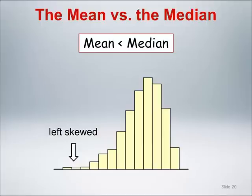If the histogram trails off to the left, as shown here, we say that the histogram is left skewed. This implies that the mean is smaller than the median. The long tail indicates that there are smaller values pulling the mean lower.